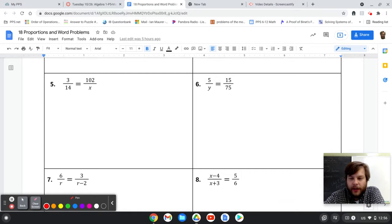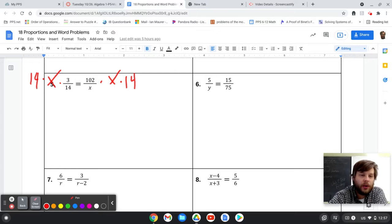Really similar idea here. I can multiply to cancel out a fraction, and so what I'm going to do is multiply both sides of this equation by x. I'm also going to multiply both sides of the equation by 14. The reason for that is I don't want fractions anymore in the problem. I just want to have everything on one line without fractions.